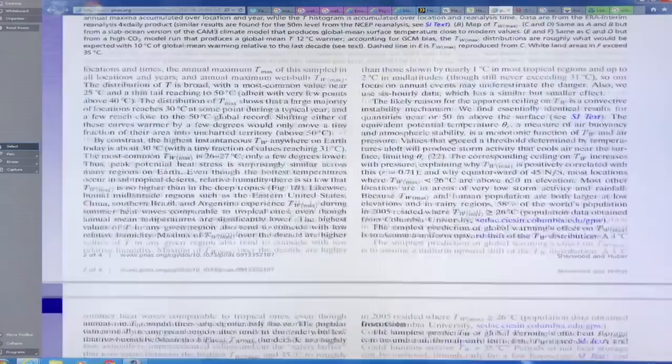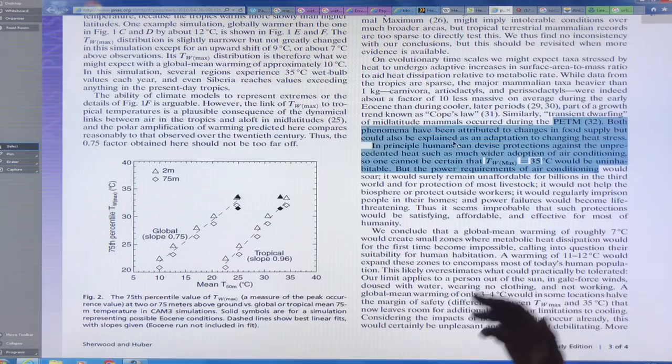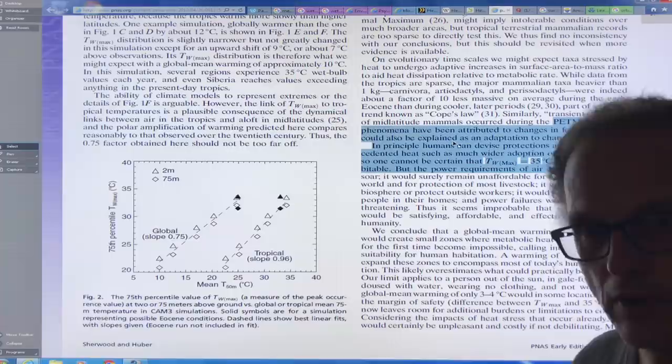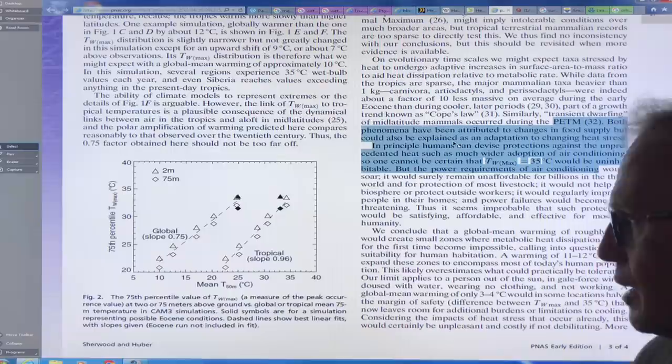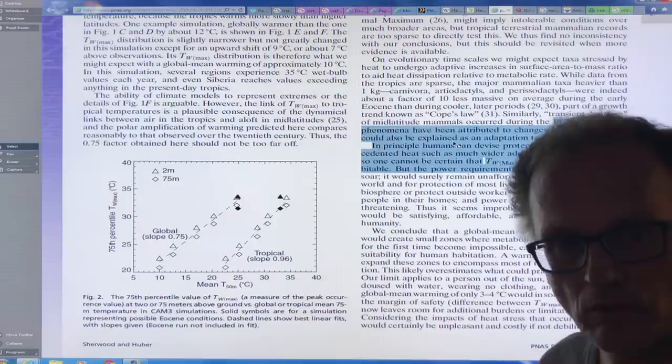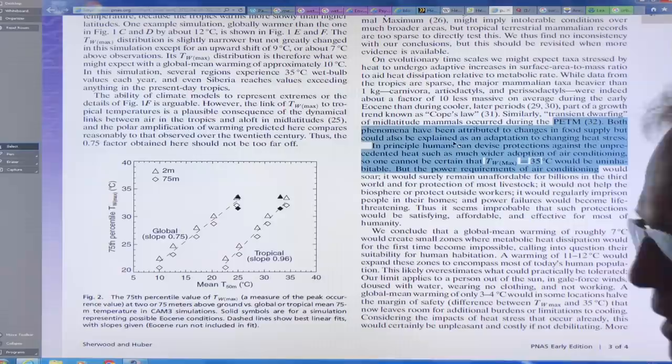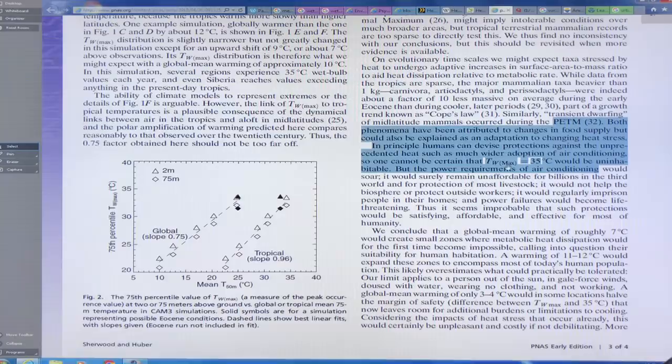The idea is during previous very warm periods on Earth, there was a lot of stress on mammals and things. But their core body temperatures are higher than that of humans, so they were still able to dissipate heat and survive better than humans would have been around in some of these time periods.